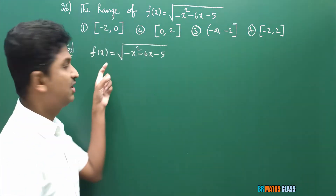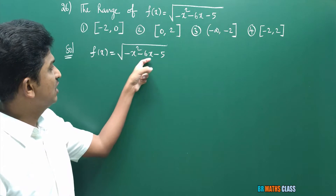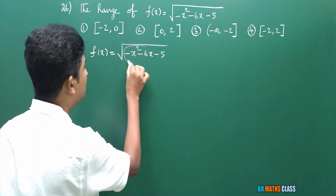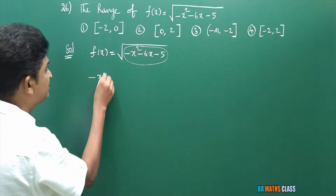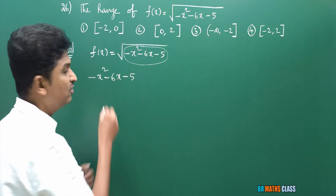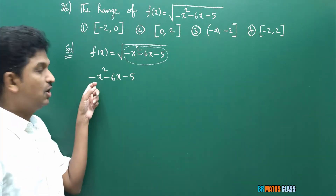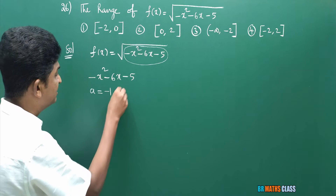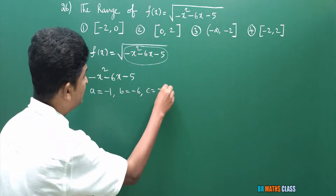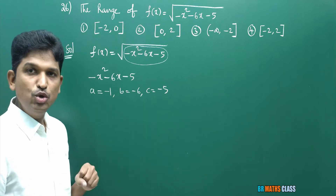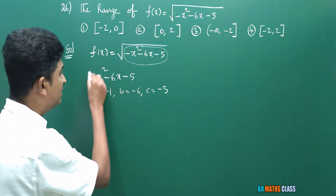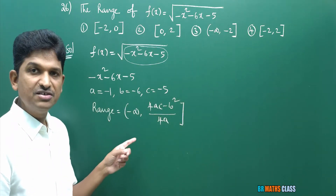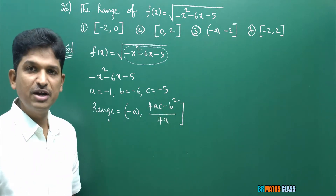First, I will take the given function: f of x is square root of minus x square minus 6x minus 5. To calculate the range of this function, first I will calculate what values the inner expression minus x square minus 6x minus 5 gives. This is of the form AX square plus BX plus C. Comparing coefficients: A is minus 1, B is minus 6, C is minus 5. A value is negative. When A is negative, the formula to calculate range is the interval (-infinity, 4AC minus B square divided by 4A].